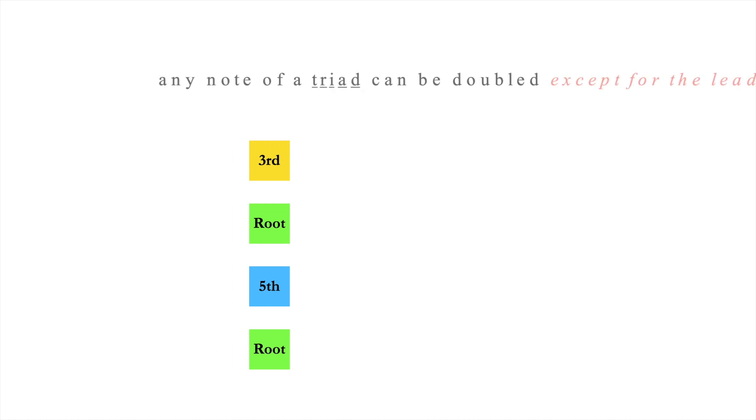In general, any note of a diatonic triad can be doubled, except for the leading tone. If we were to double the leading tone and resolve each up by step, we would create parallel octaves. A doubled leading tone also colors the chord very strongly.